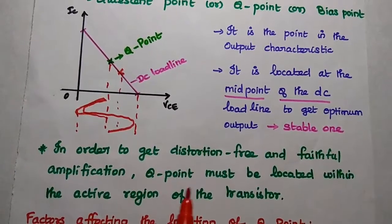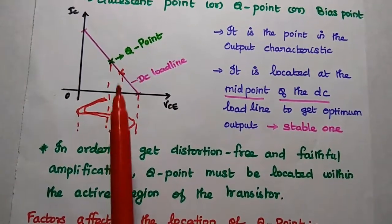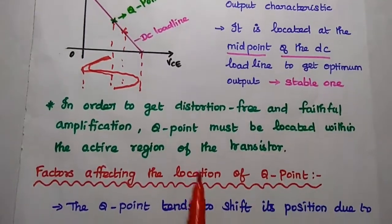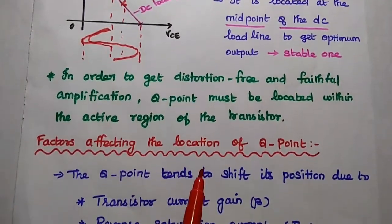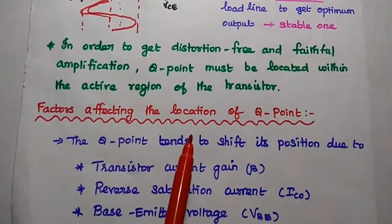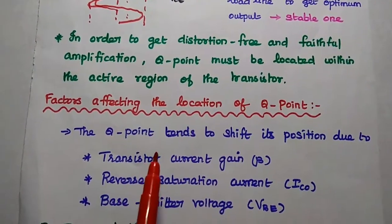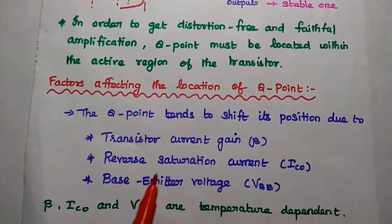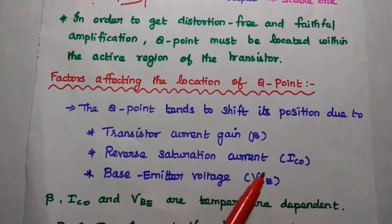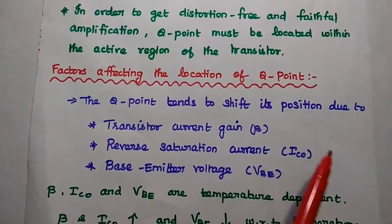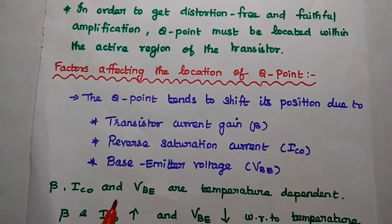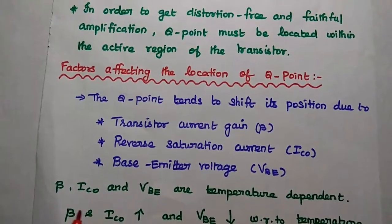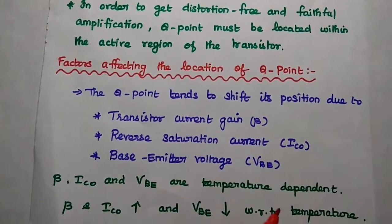We also have to ensure that the Q point is located within the active region. In practical cases, there are some factors affecting the location of the Q point. The Q point tends to shift its position due to the transistor current gain beta, reverse saturation current ICO (also called leakage current), and the base-emitter voltage, which is the input voltage.